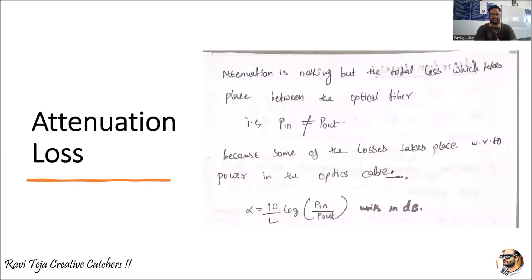Let's look at the first: attenuation loss. In microwave engineering, we have already learned that when an electromagnetic wave or microwave is moving through a waveguide from one point to another, we use several types of attenuators to attenuate the microwave signal. Attenuation means the power present in the microwave signal passing through the waveguide or attenuator will be altered without affecting the quality of the signal. The same concept applies to optical fiber as well.